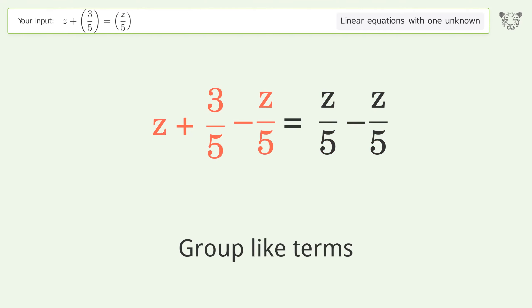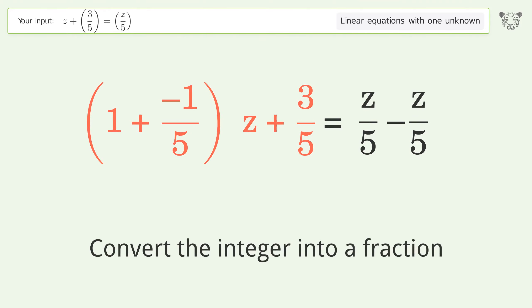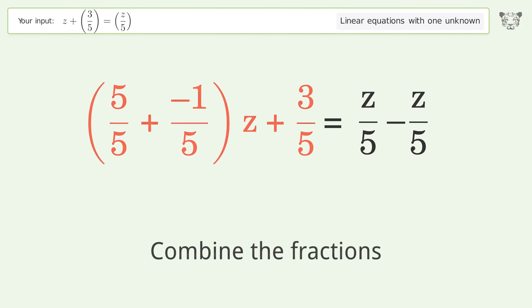Group like terms and group the coefficients. Convert the integer into a fraction, then combine the fractions.